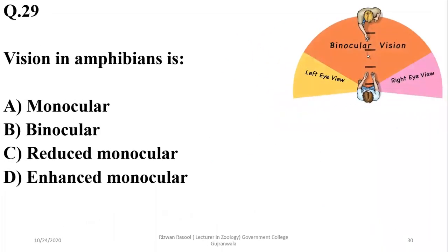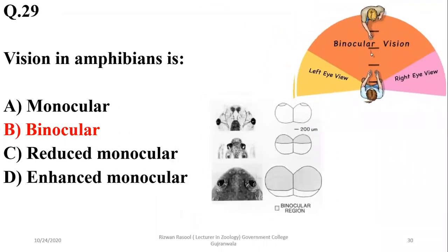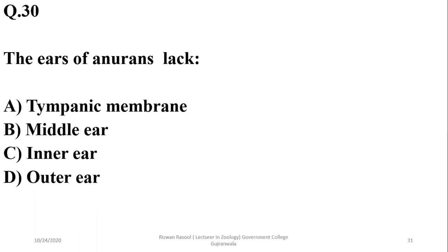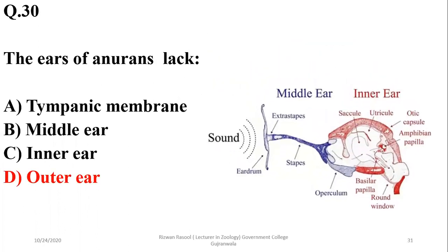Vision in amphibians is binocular — they make use of both eyes for observing a specific object. For most anurans, the ear lacks an outer portion, but it has a tympanic membrane in the middle ear and inner ear, as you can see in the structure shown.